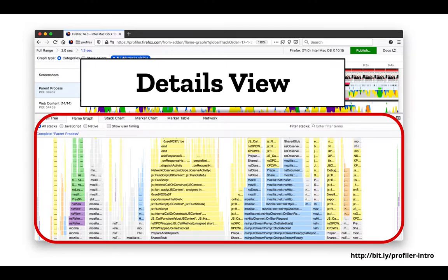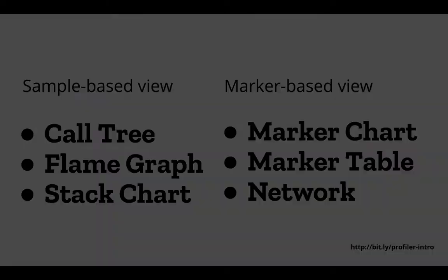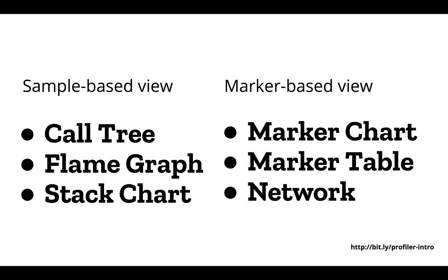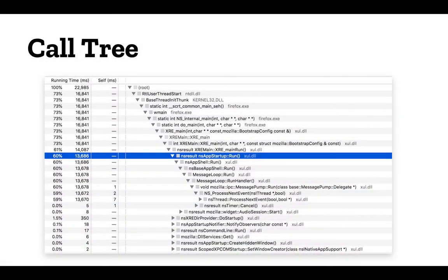So that's some graph theory. Let's look at how this gets displayed in the profiler. You have the details view down below when you select a thread from up top. The sample-based views are the call tree, the flame graph, and the stack chart. The marker-based views are the marker chart, marker table, and network panel. The call tree view shows the call tree data structure I just described, and each row pertains to a node on the graph — a call node.